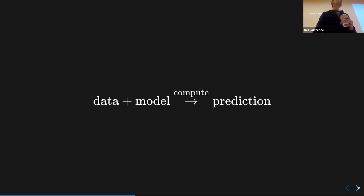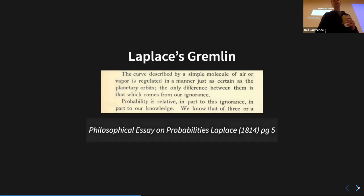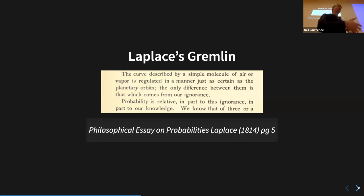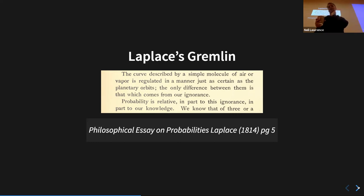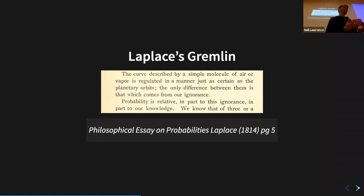We have Laplace's gremlin: we don't know all these things. Even in the case where we knew the mind of God in the Conway model, we still don't know how things are going to pan out without doing the computation, and computation requires work. There's really nice stuff on the theory of computation - computation requires energy and time. Given that we typically want to make decisions with constraints on energy and time, we also have a constraint on our computation.